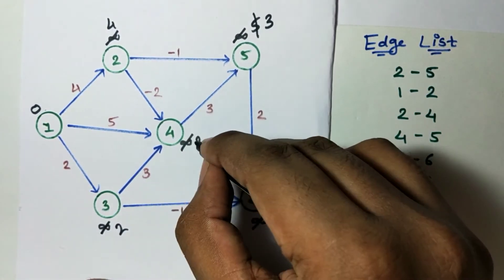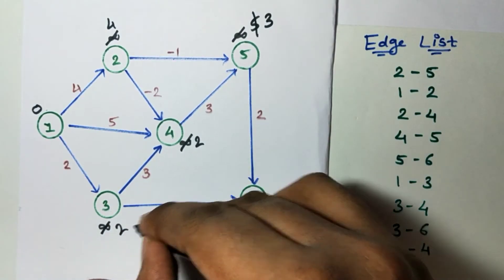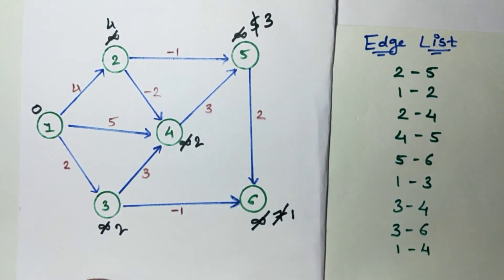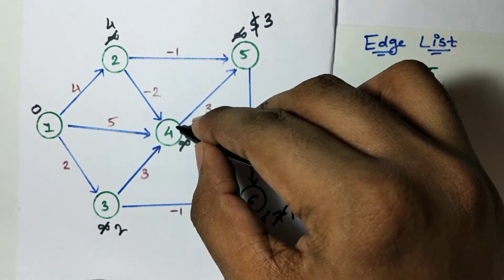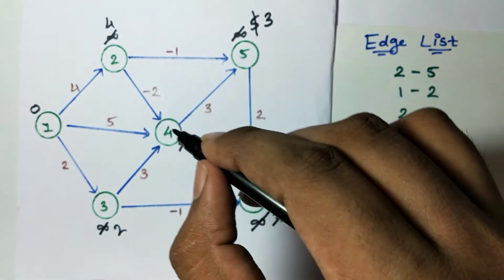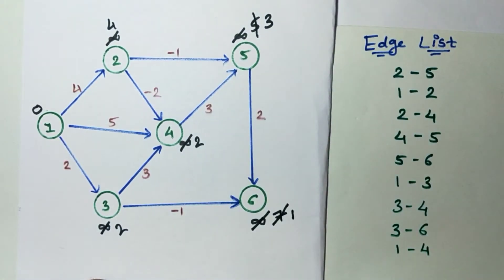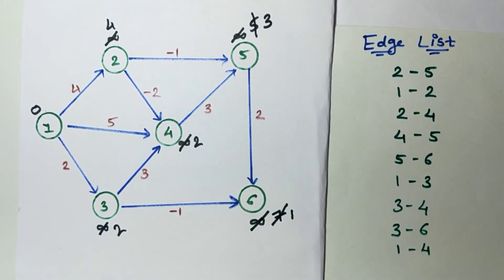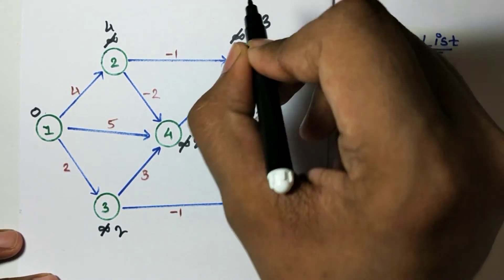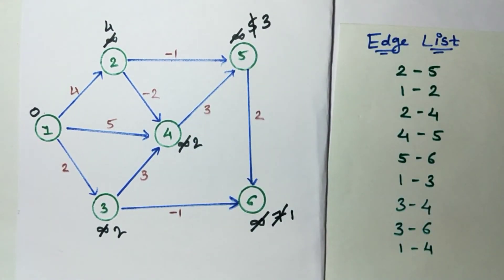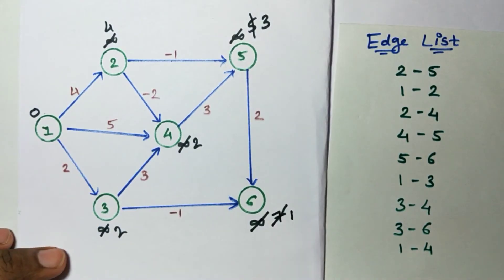Edge 3 to 4: 2 plus 3 is 5, greater than 2, don't change. Edge 3 to 6: 2 minus 1 is 1, don't change. Edge 1 to 4: 0 plus 5 is greater than 2, don't change. In the second iteration we found that one edge was changed, so our final graph after the second iteration will look like this.